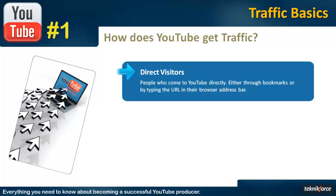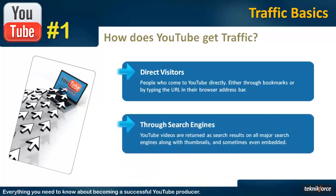The second most important source is search engines. All of them, including Google and Bing and many others, index YouTube videos and return them as part of their search results. YouTube videos are actually given a special category — whenever a video appears in search results, a thumbnail may also appear next to it. This means people are drawn to it and will want to click on it more often than a regular search result, because of the thumbnail.